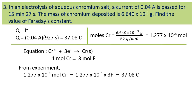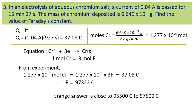From experiment, the moles of chromium equivalent to the value of Faraday equivalent to 37.08 coulomb. And finally, the value of 1 Faraday equivalent with 97,322 coulomb. The answer for the student calculation could be accepted close to 95,500 coulomb to 97,500 coulomb.